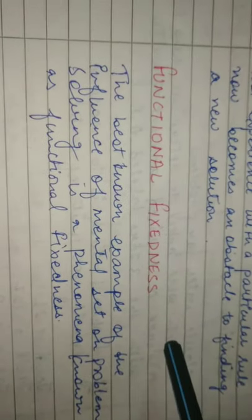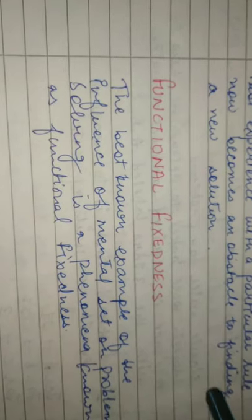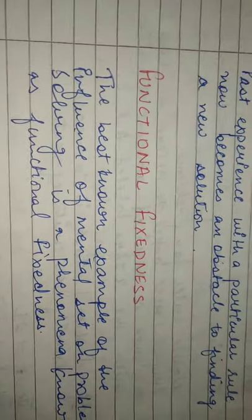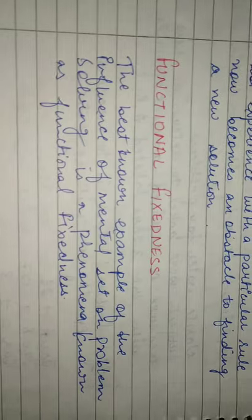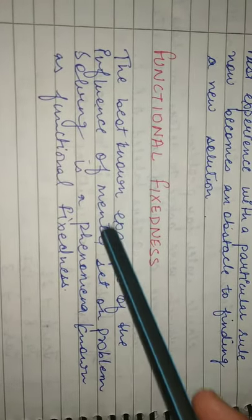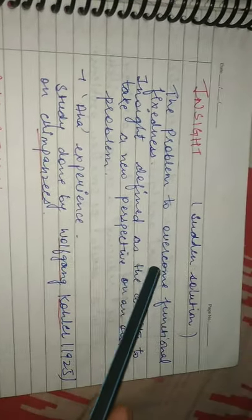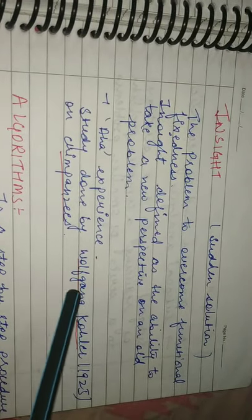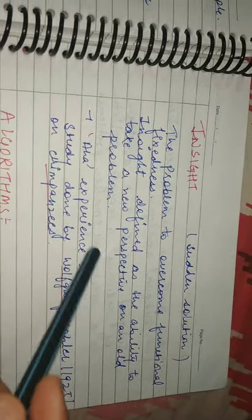Functional fixedness — functional fixedness क्या होता है? जहाँ पे people fail हो जाते हैं कोई भी problem solve करने के लिए, because they are fixed on usual functions. यह mental set को influence करता है in problem solving phenomena. Insight — Insight क्या होता है? Sudden solution of a problem, जहाँ overcome करते हैं functional fixedness को. यह experiment Wolfgang Kohler ने 1925 में chimpanzees पे किया था, और Insight में हमारे experience होते हैं.